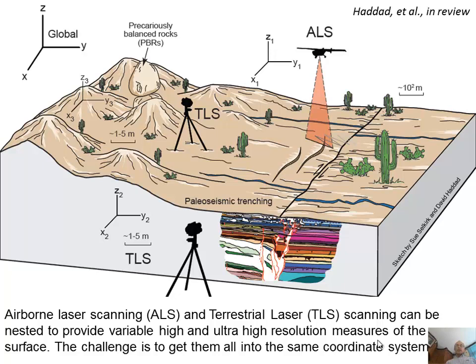We have something called airborne laser scanning, and we can also have terrestrial laser scanning. Airborne laser scanning is really good for hundreds of square meters to square kilometers, and terrestrial laser scanning is more for square meters, for outcrops. We can also characterize features like precariously balanced rocks from secondary structures that may be indicators of strong ground motion. The key challenge is putting everything in the same coordinate system — global XYZ, airborne laser scanning XYZ, terrestrial laser scanning XYZ. A lot of the hard work is doing that geo-referencing.